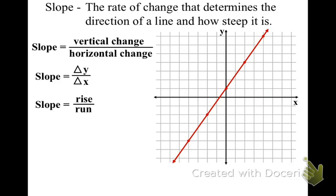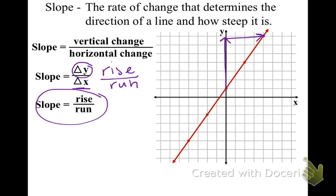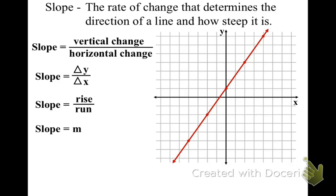One way you might have heard of is something called rise over run. When we rise, our y value is changing — I'm going up, I'm rising. Then I'm running, which means my x value is going to change, so I move on the x-axis. Another way of thinking about it is rise over run. One thing I really want you to take away: if you ever see the variable m, we are referring to slope. I don't know why they choose m, but m always represents slope.